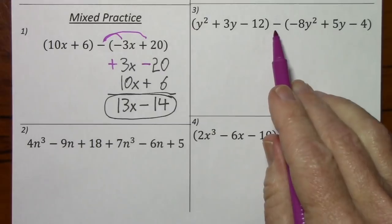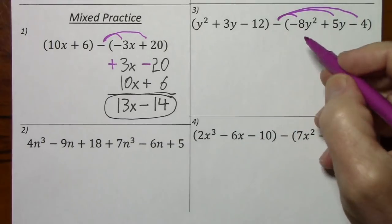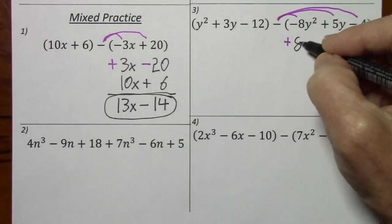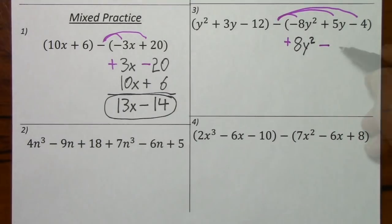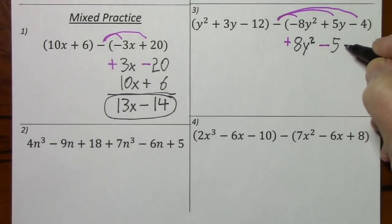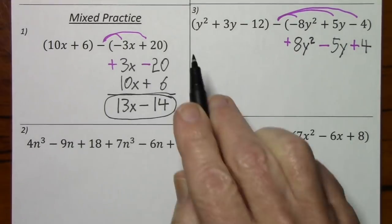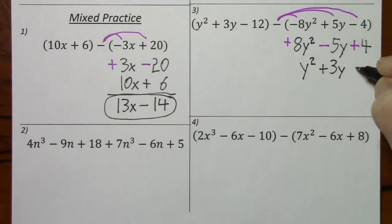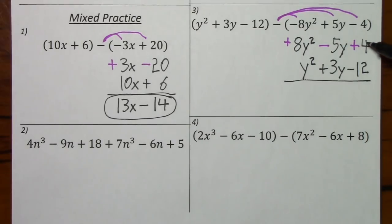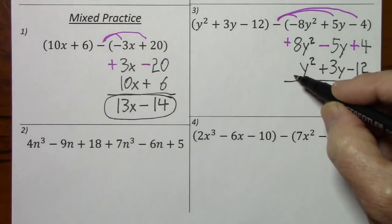Looking at this one, we'll have to distribute the negative. Negative times negative will give us a positive 8y squared. Negative times positive will give us a negative 5y. And then negative times negative gives a positive result. I'll stack these underneath the like terms. This will give us a negative 8, negative 2y. And there's a 1 in front of the y squared if nothing's written.